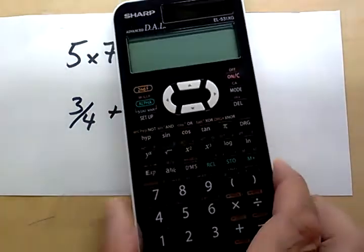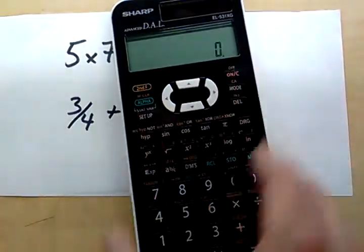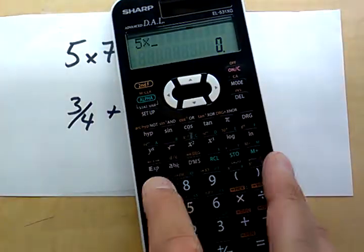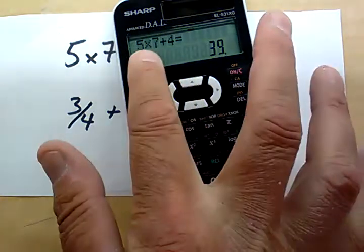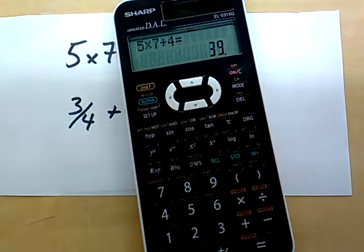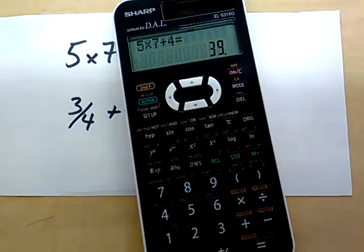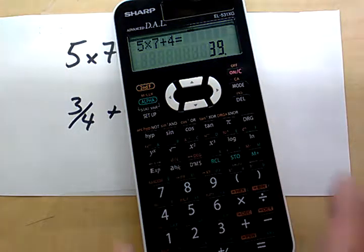So you're going to do 5 times 7 plus 4. So I'll turn this on. 5 times 7 plus 4. Notice that everything I typed in is showing, and then it gives you the answer. So you know that you put it in right, which means you can be pretty sure the answer is right.